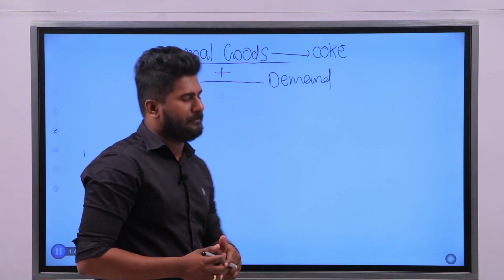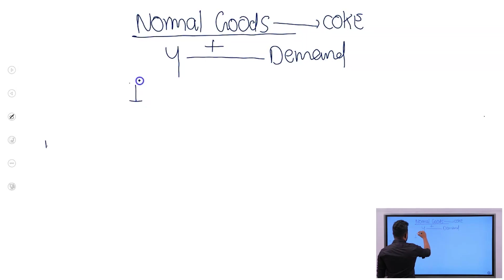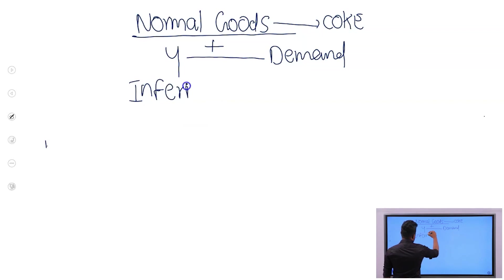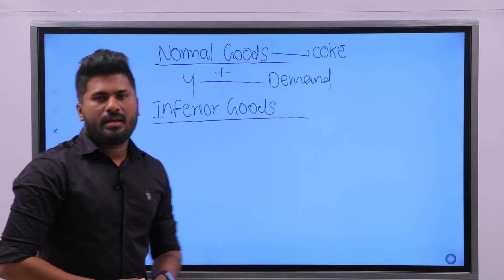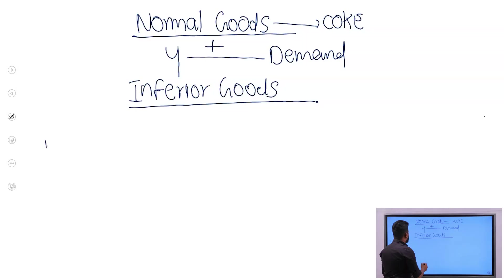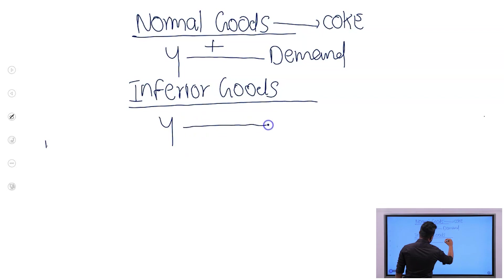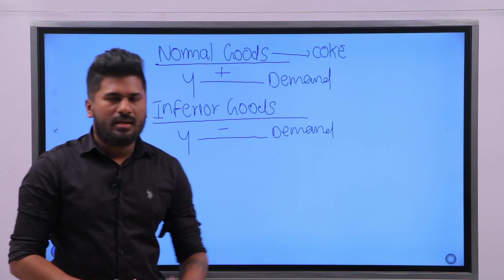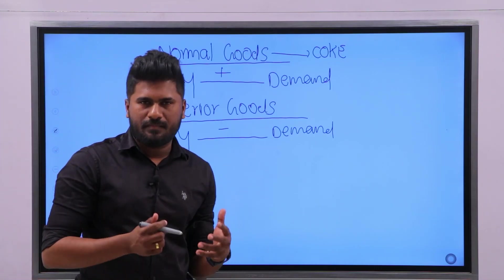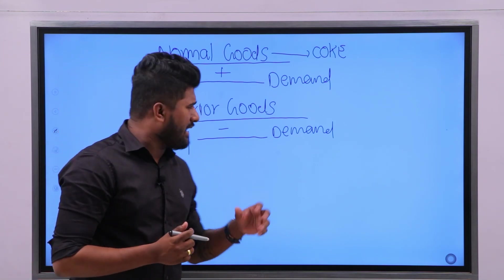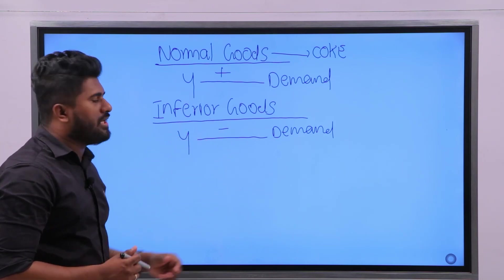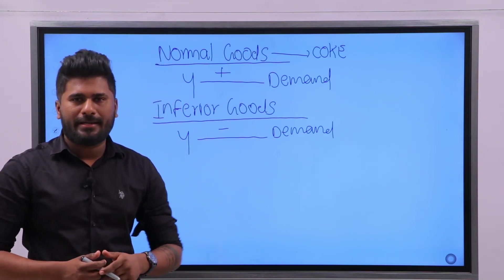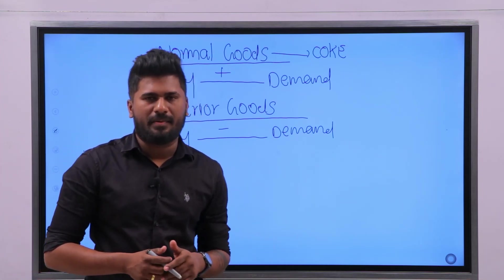These are the goods we are purchasing regularly. The next type of good is inferior goods. Inferior goods can be identified as goods which have a negative relationship between income and demand. This is a very important distinction to understand.